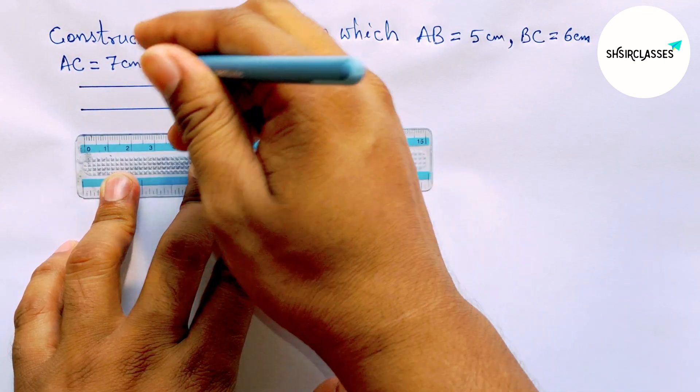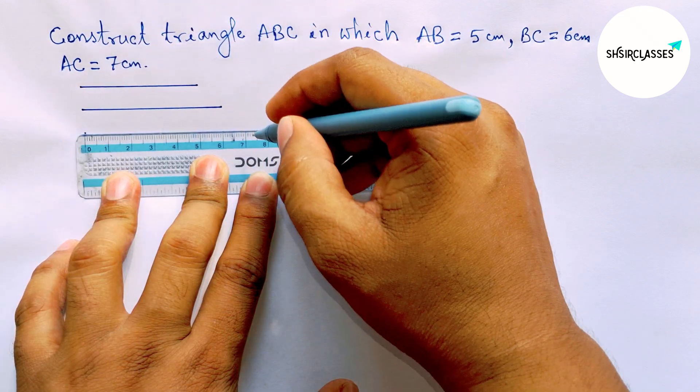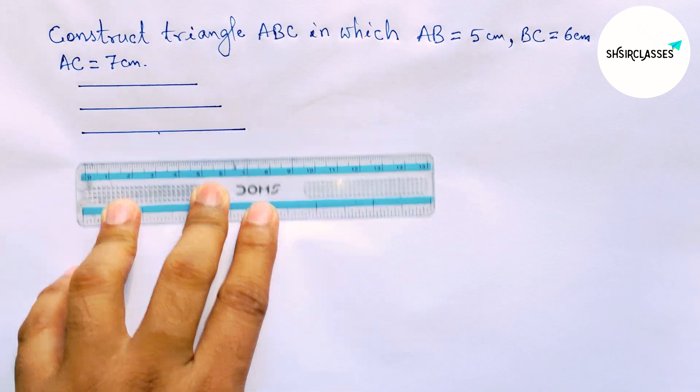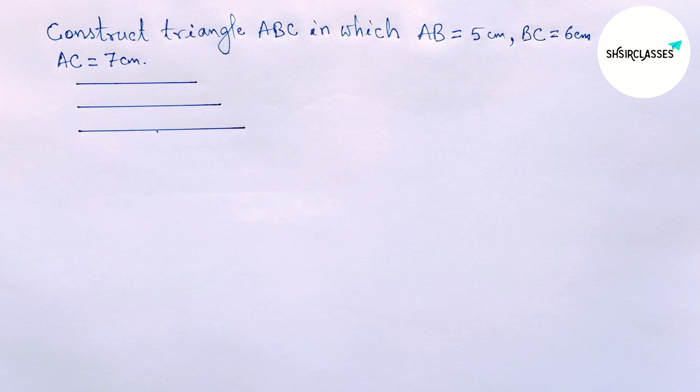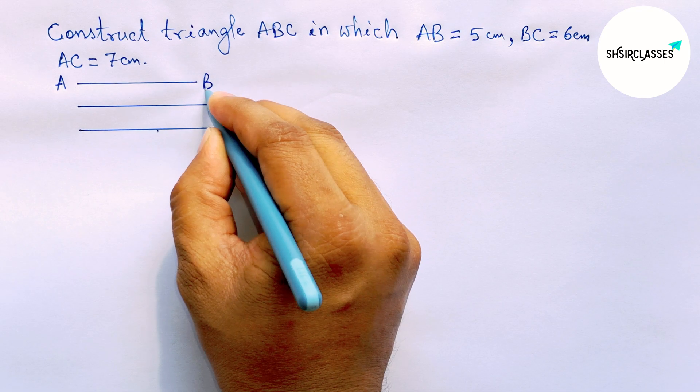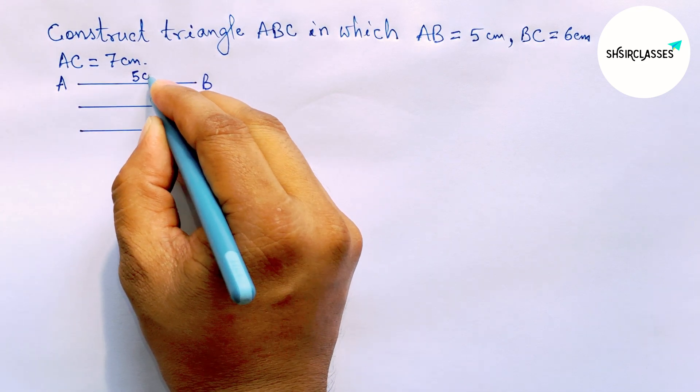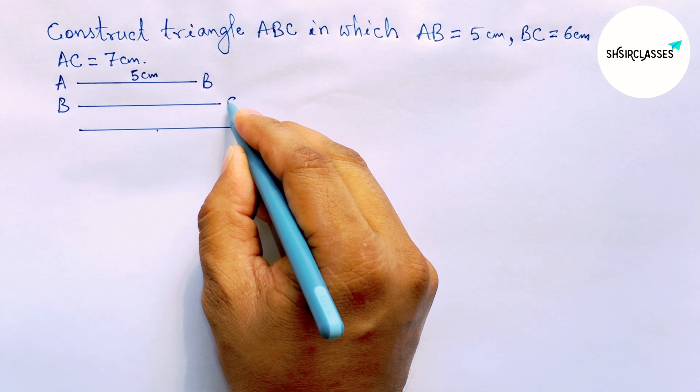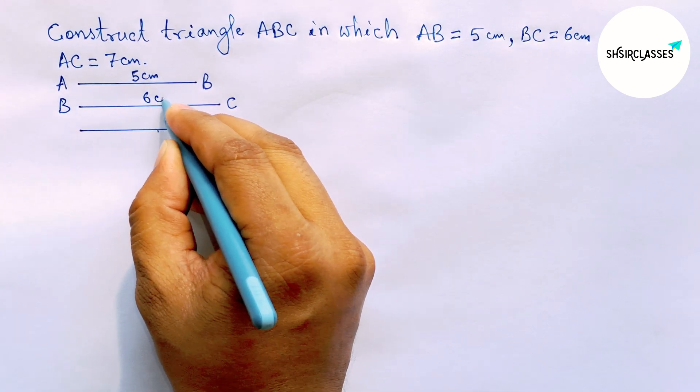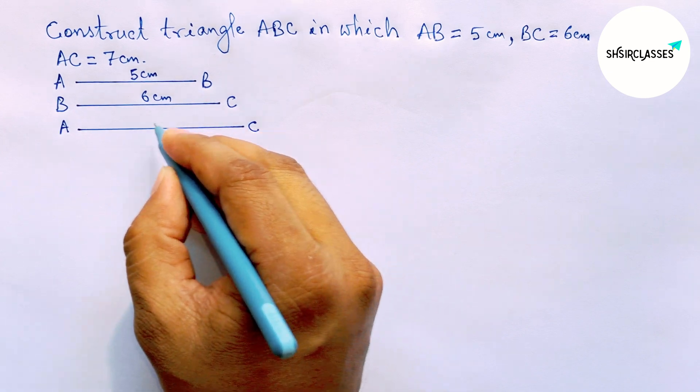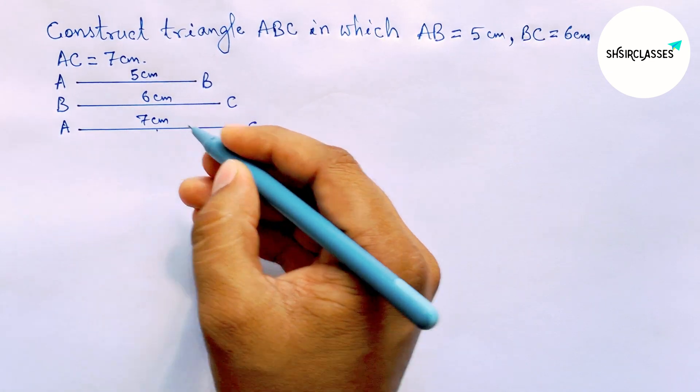And last, drawing a line segment of length 7 centimeters. Okay, next labeling here AB, so AB equals 5 centimeters, then here BC, so BC equals 6 centimeters, and last labeling here AC, so AC equals 7 centimeters.